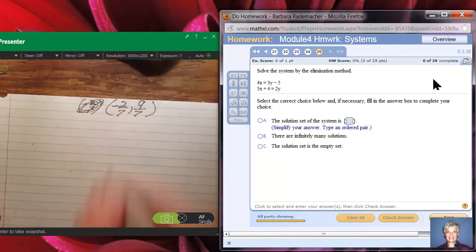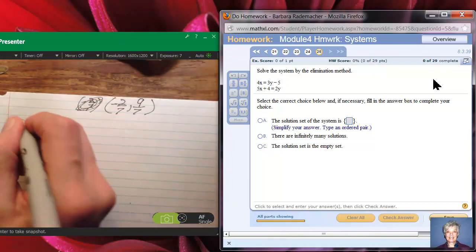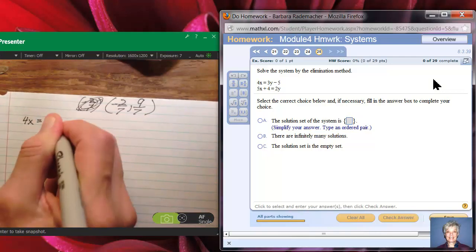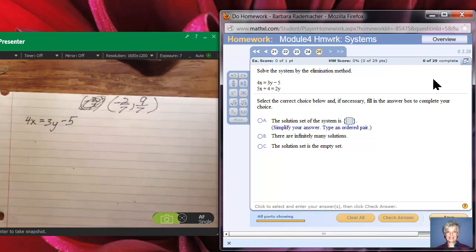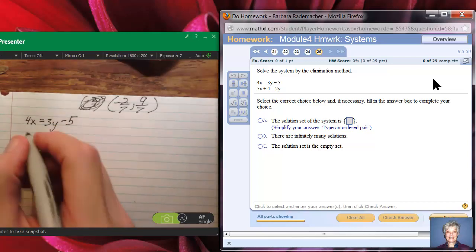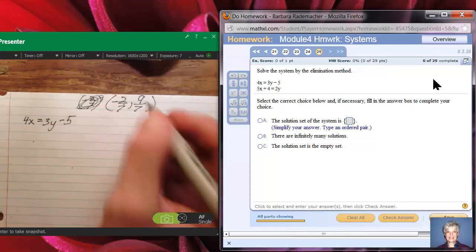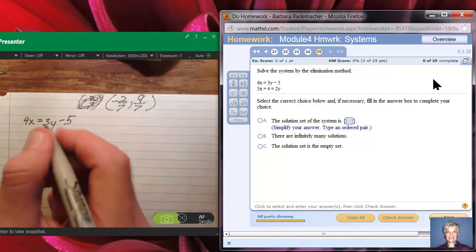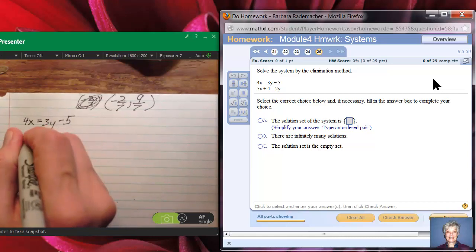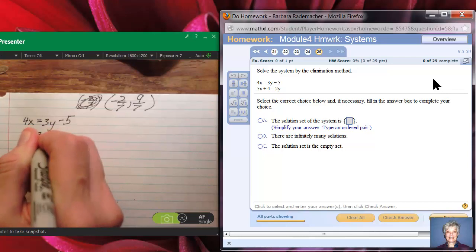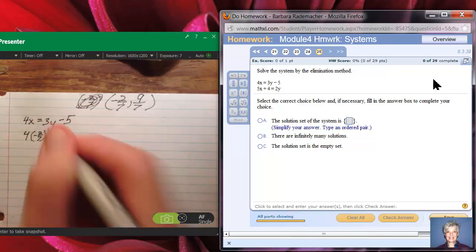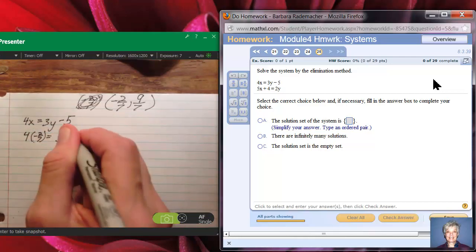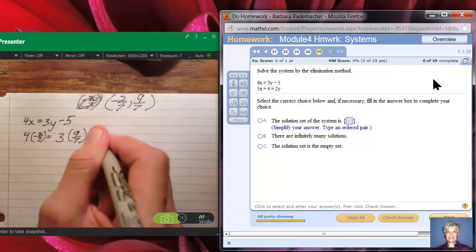My first equation, my original equation is 4x equals 3y minus 5. I'll put that number in for x and this number in for y. I'm not going to sweat the fractions because I have a TI graphing calculator. 4 times negative 2/7 is what I'll have on the left and on the right I'll have 3 times 9/7 minus 5.